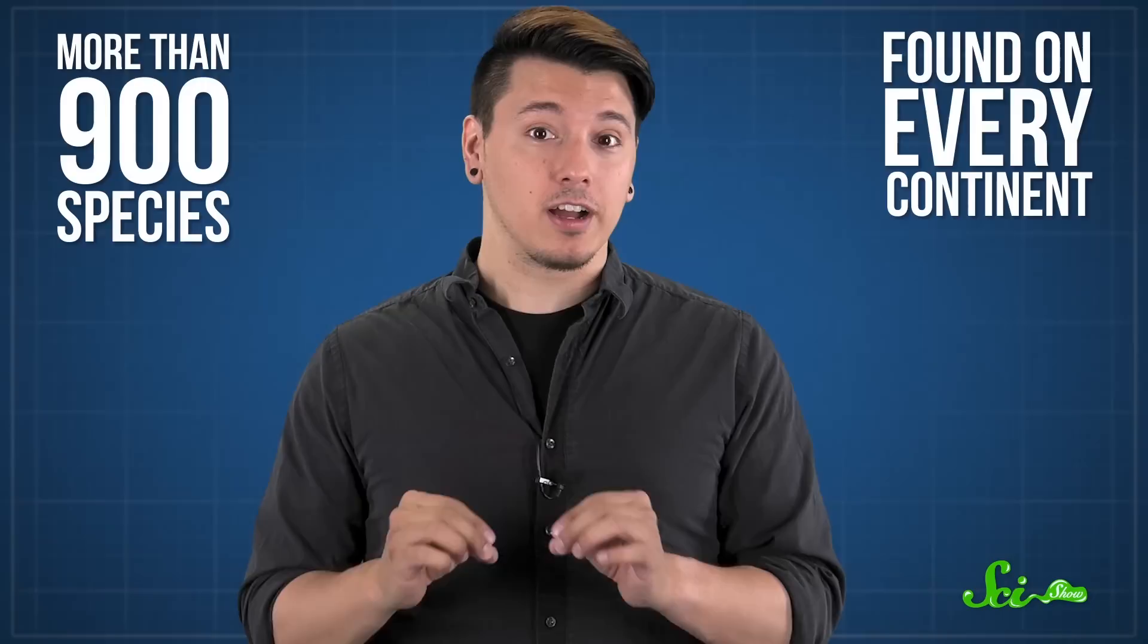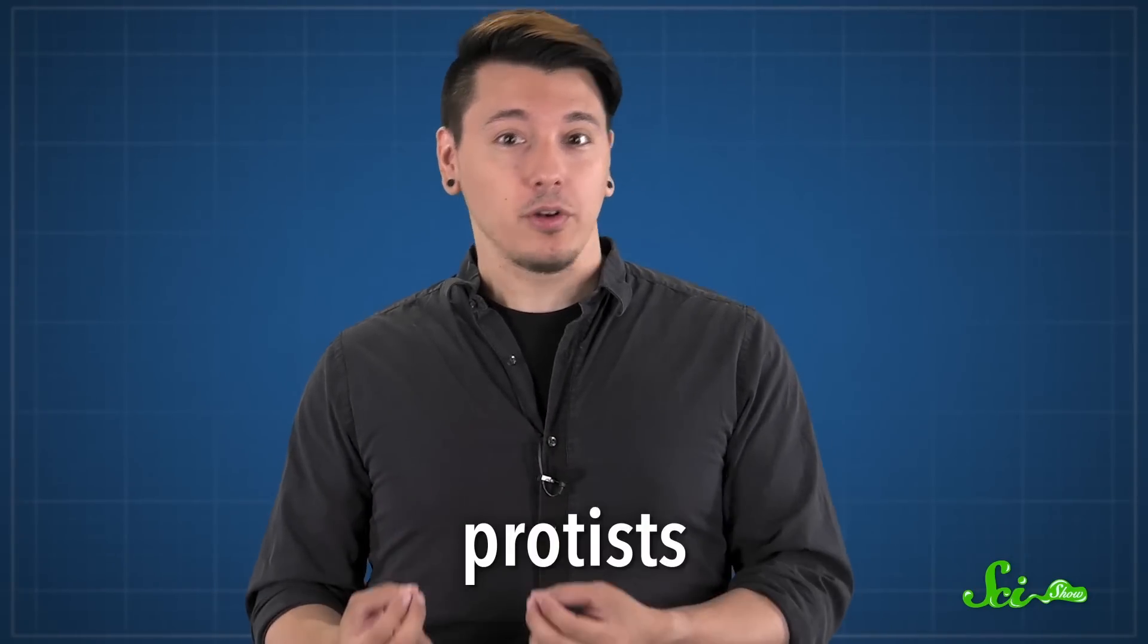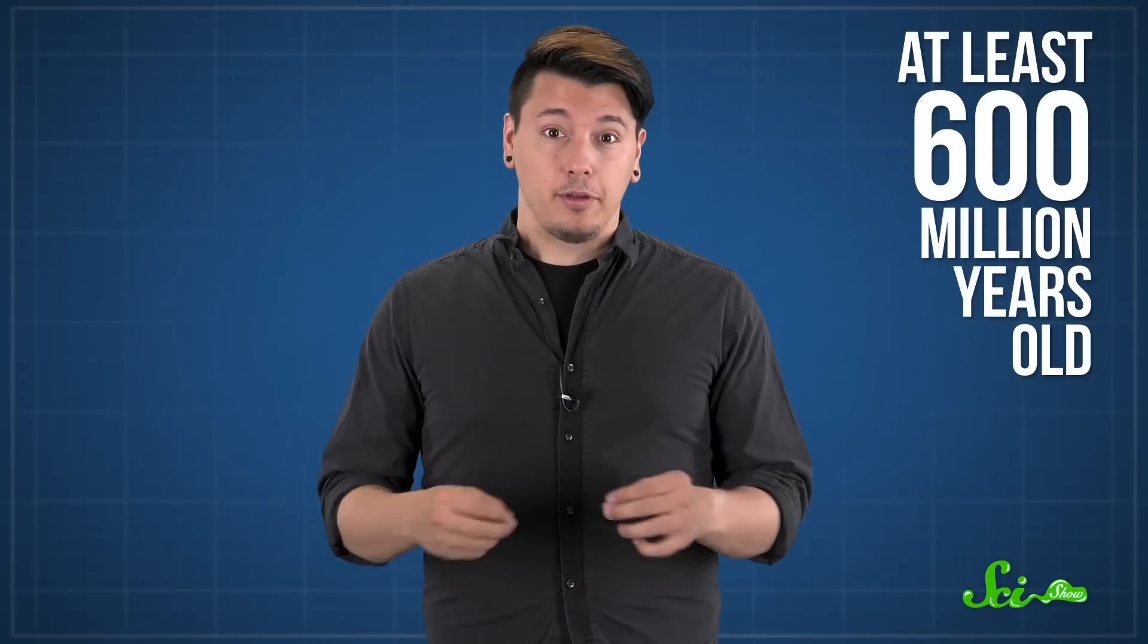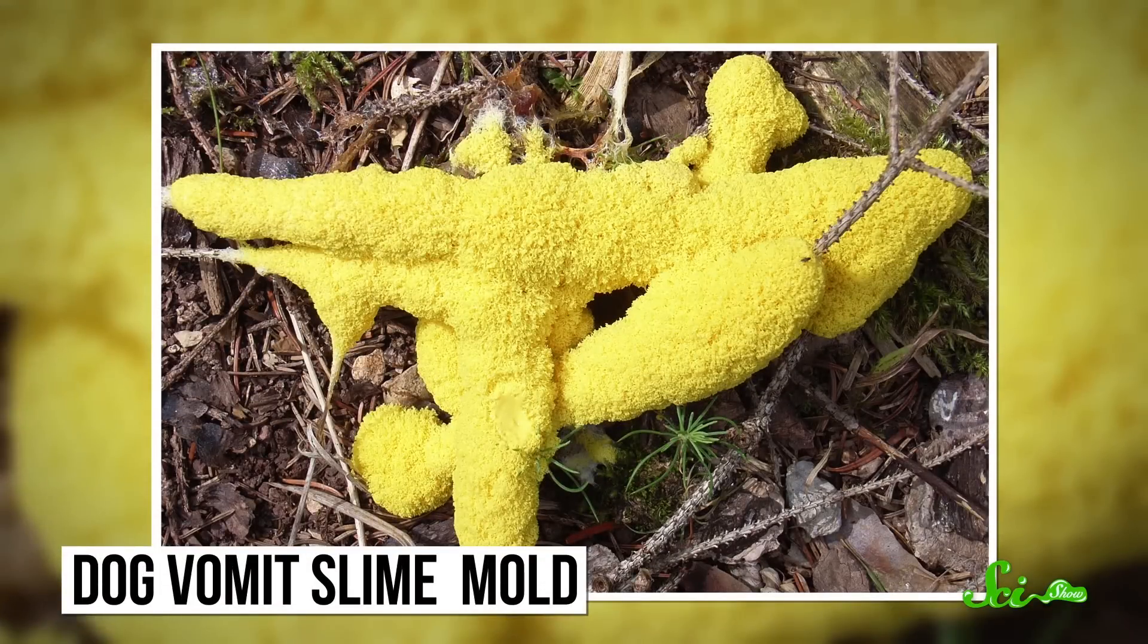The term slime mold actually refers to more than 900 species, found on every continent. And despite the name, they're not fungi. They're actually lumped in with protists. These guys have been around for at least 600 million years. They're a diverse group of amoeba-like eukaryotic organisms, which means they have cells surrounded by membranes and DNA tucked inside a nucleus. They come in all sorts of shapes and colors. There's even one called dog vomit slime mold, because it kind of looks like bright yellow puke.